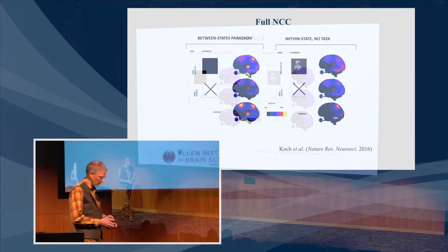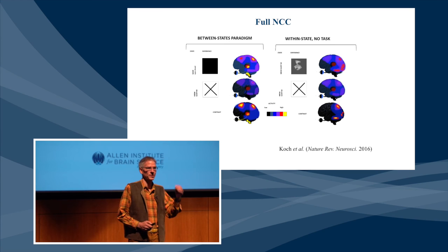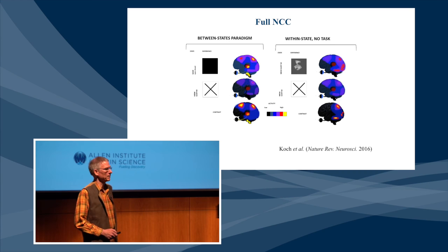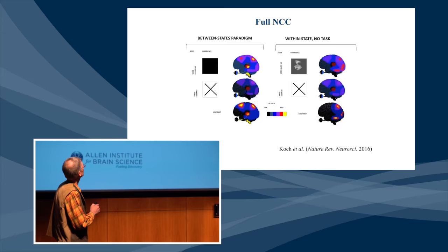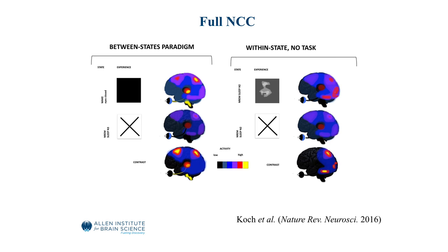Now this is different and has to be distinguished. The previous experiment relates to a content-specific neural correlate of consciousness — in this case, seeing a face versus just seeing a noisy scene. A different paradigm is to contrast seeing anything versus seeing nothing whatsoever, having no conscious experience. Typically an experiment would be like you're in a scanner, there's no stimulus — a resting state-like paradigm — you're awake, eyes are closed.